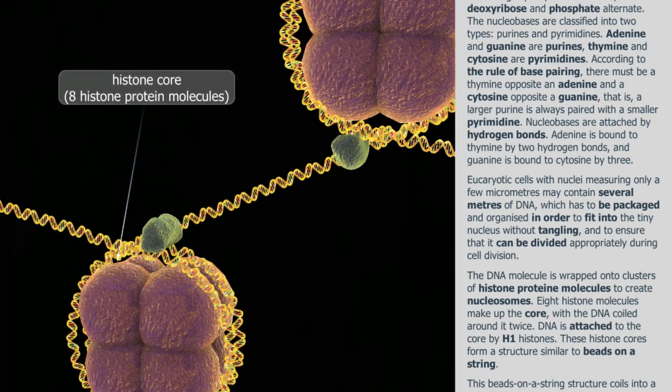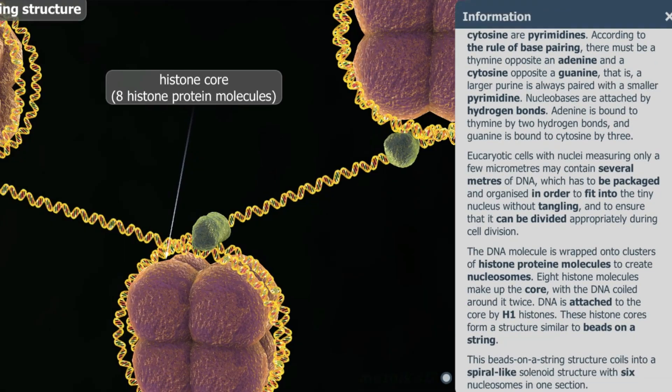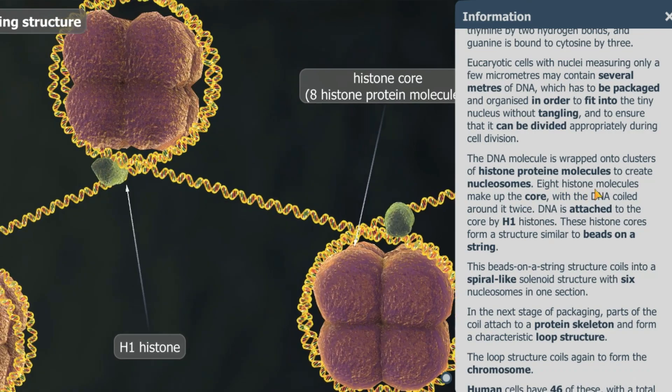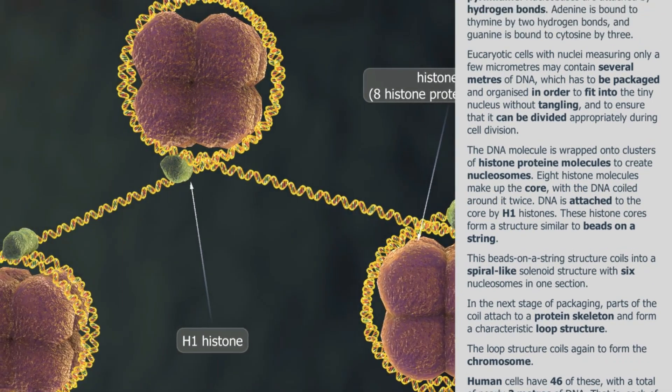The DNA molecule is wrapped onto clusters of histone protein molecules to create nucleosomes. Eight histone molecules make up the core, with the DNA coiled around it twice.